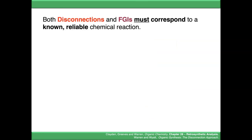The rule is that both disconnections and FGIs must correspond to a known reliable chemical reaction. We can't just disconnect any bonds, because if you think about it, if the forward reaction doesn't exist, how would you do that in the lab?